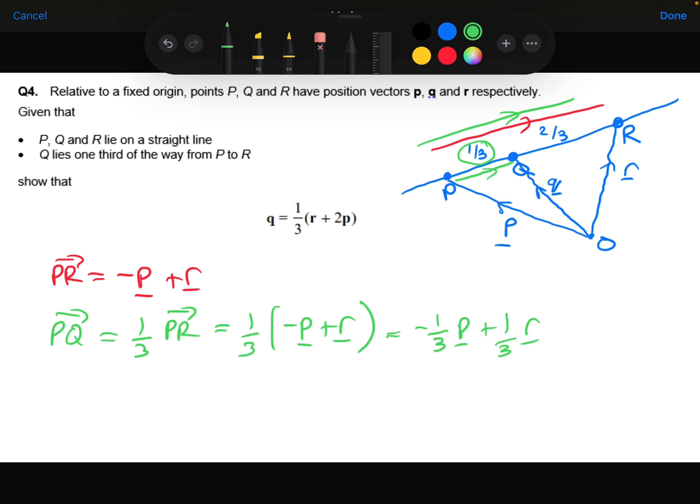Now that's not the only way I could do P to Q. I could also do P to Q by going P to O, which is minus p, plus O to Q, which is q. So this is P to Q, this is P to Q, this is P to Q, they should be equal to one another.